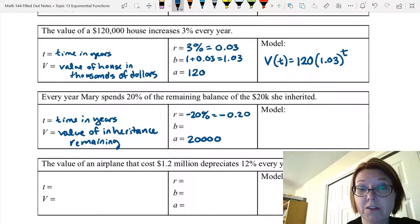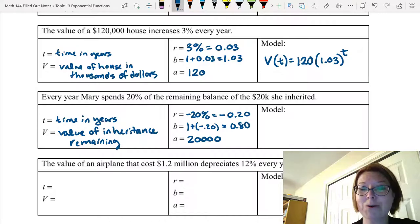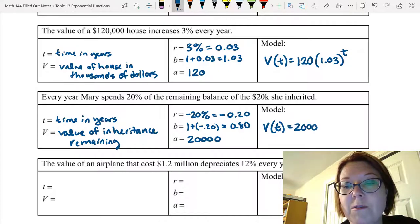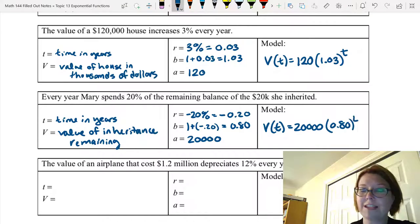The B value is the growth factor. That's one plus negative 0.20, which is 0.80. In other words, every year there's 80% remaining from the previous year. Our model is going to be V of T equals 20,000 left parentheses 0.80 right parentheses to the T power.